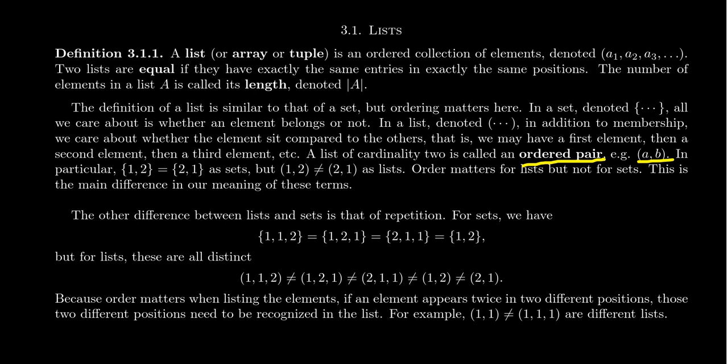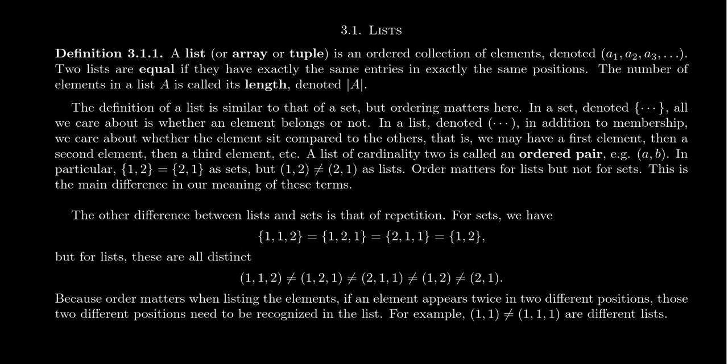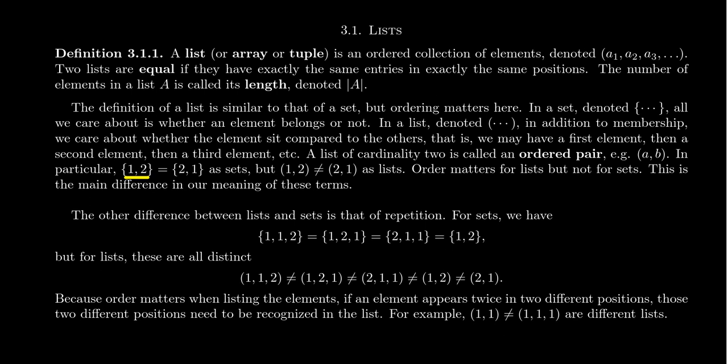Let's compare and contrast sets versus lists. When it comes to sets, the set {1, 2} is identical to the set {2, 1} — the order in which you list the two elements makes no difference. But with regard to ordered pairs, (1, 2) and (2, 1) are in fact distinguishable. They're not the same list, even though the underlying set of elements are equal. That's the important thing to remember about lists: the order matters. If you have a pair and you switch the elements around, that gives you a different ordered pair.